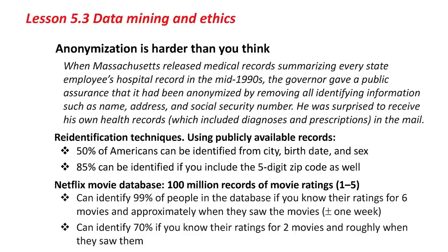There was some interesting work done on a movie database. Netflix released a database of 100 million records of movie ratings — they got individuals to rate movies one to five. It turned out that you could identify 99% of people in the database if you knew their ratings for six movies and approximately when they saw them. Even if you only know their ratings for two movies, you can identify 70% of people. This means you can use the database to find out the other movies that these people watched — they might not want you to know that.